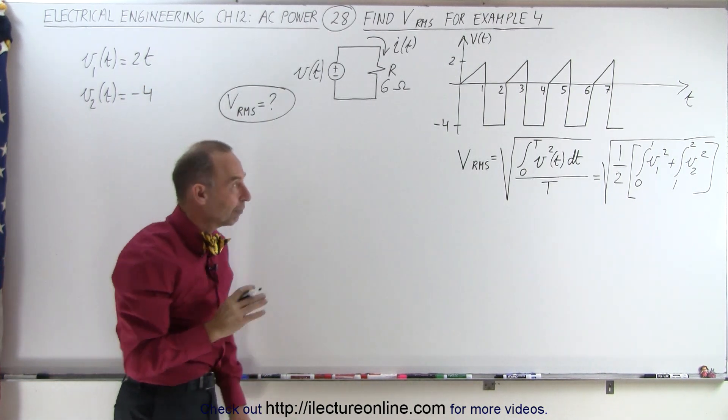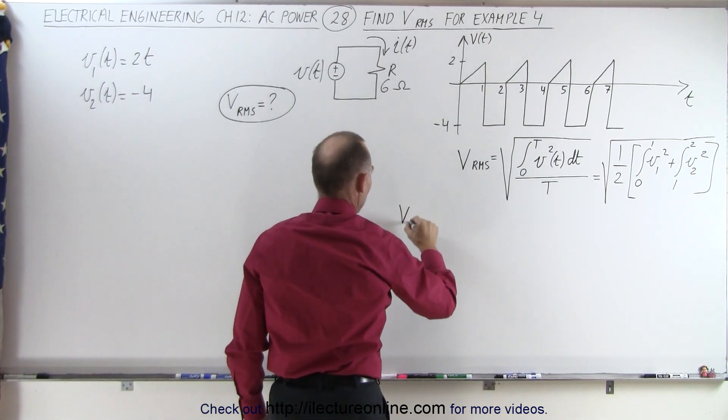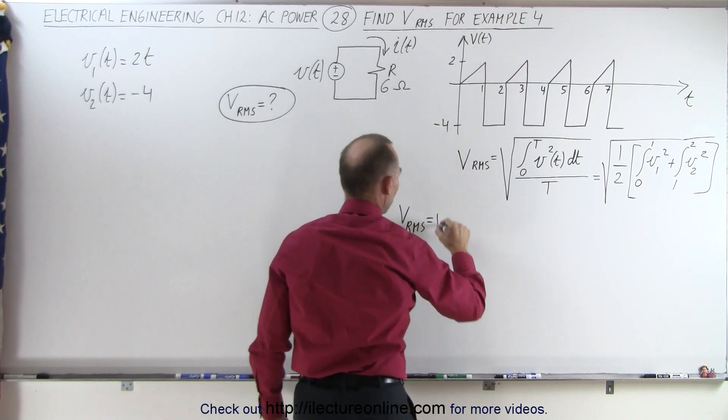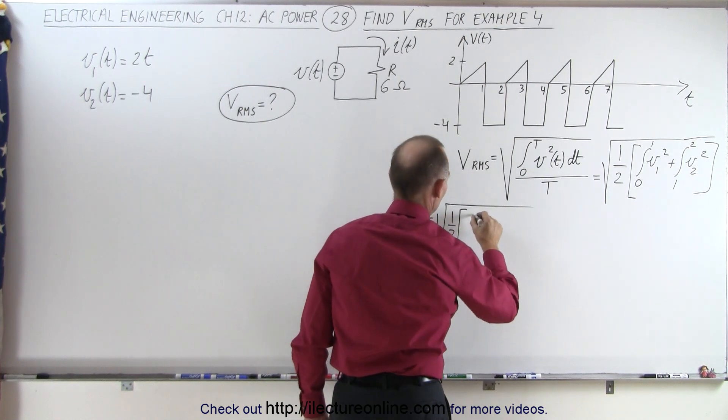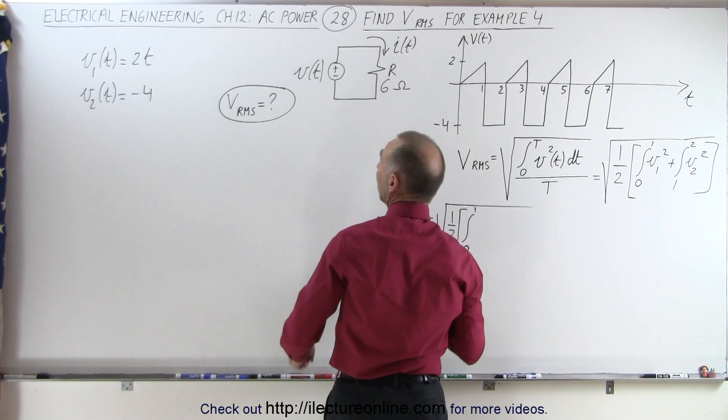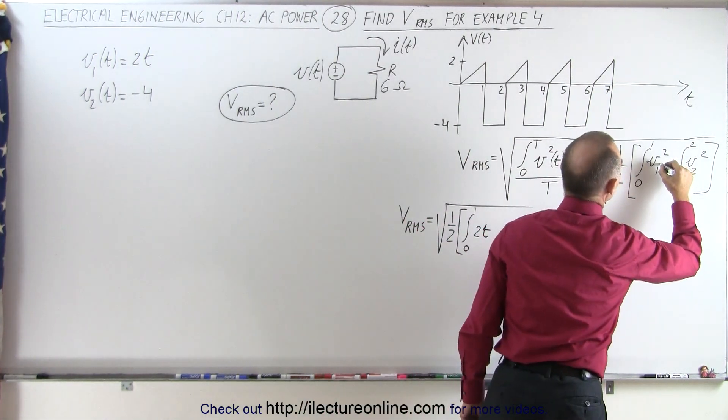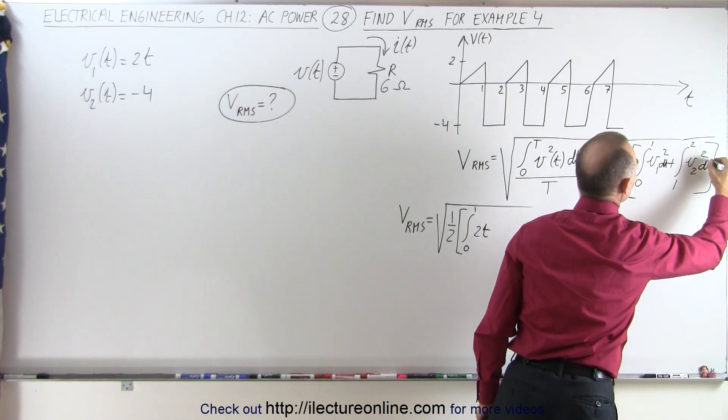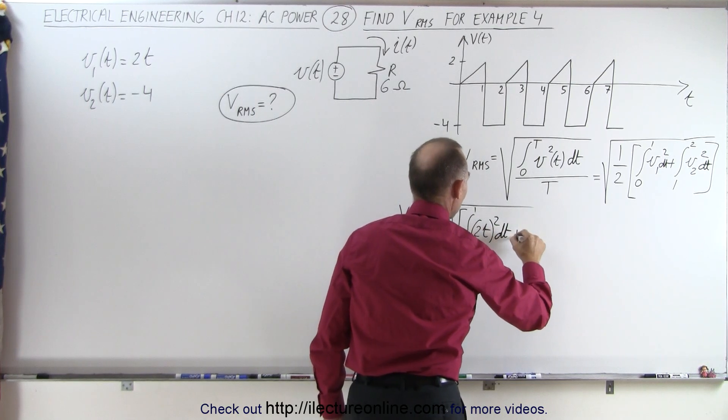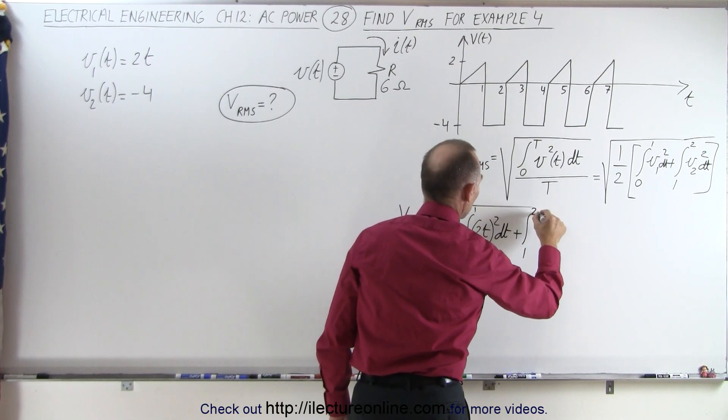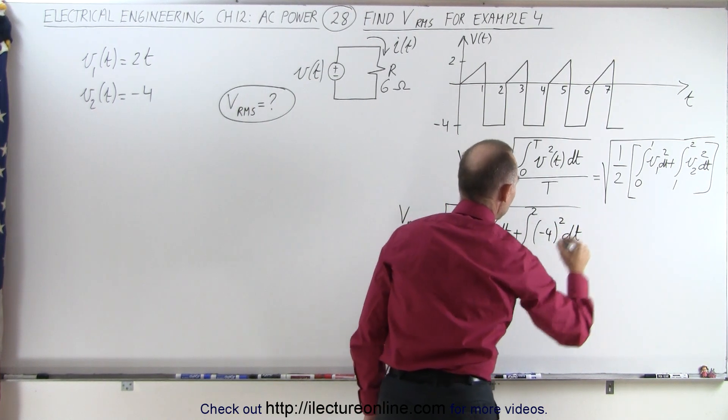So those are the two voltage functions for the two portions of the wave. So VRMS is going to be equal to the square root of 1 half times the first function from 0 to 1. We get 2T squared. Of course, I need DTs in here. Let me quickly put in some DTs, otherwise it doesn't look very good, does it? So 2T quantity squared times DT plus the integral from 1 to 2 of negative 4 squared times DT.